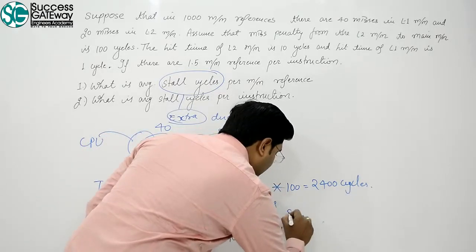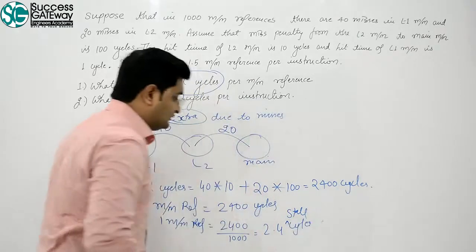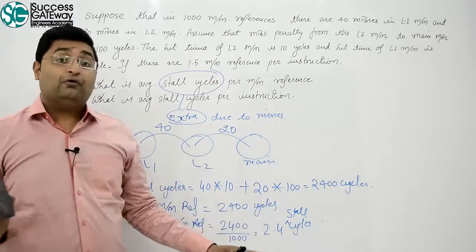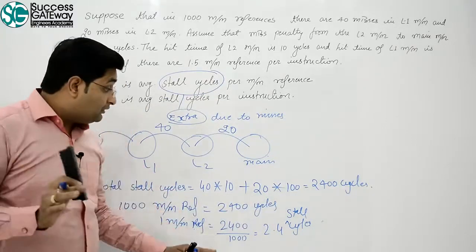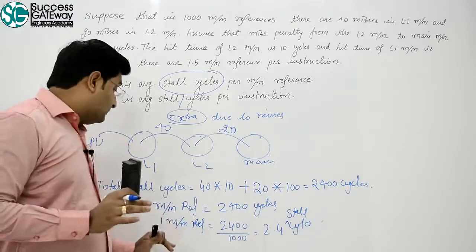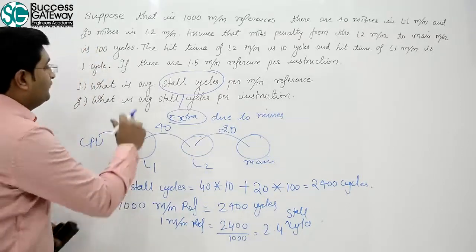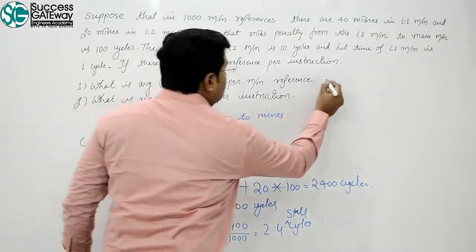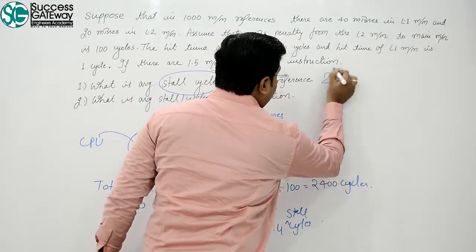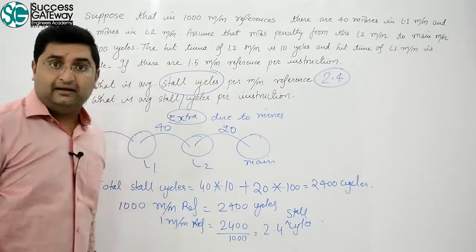So we can write: 2.4 stall cycles per memory reference. The first answer is 2.4.